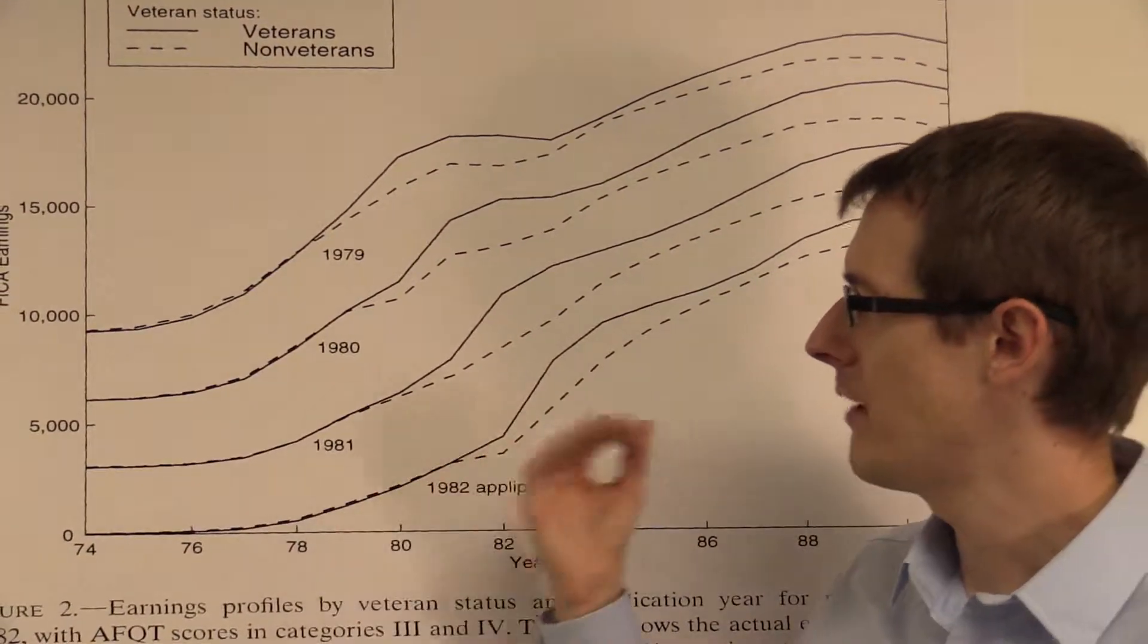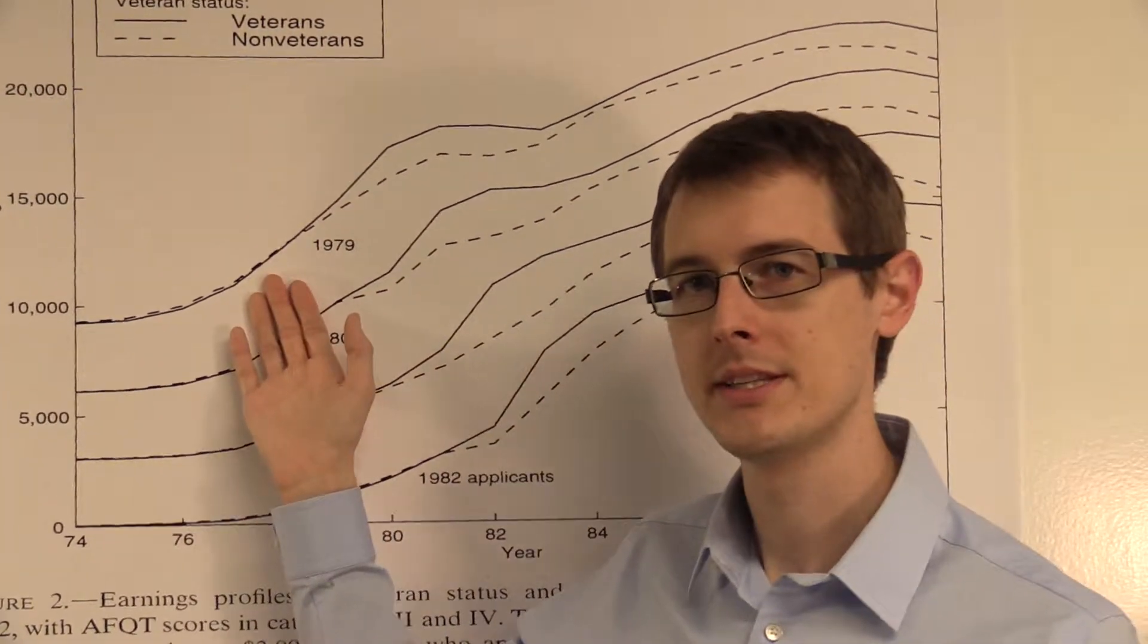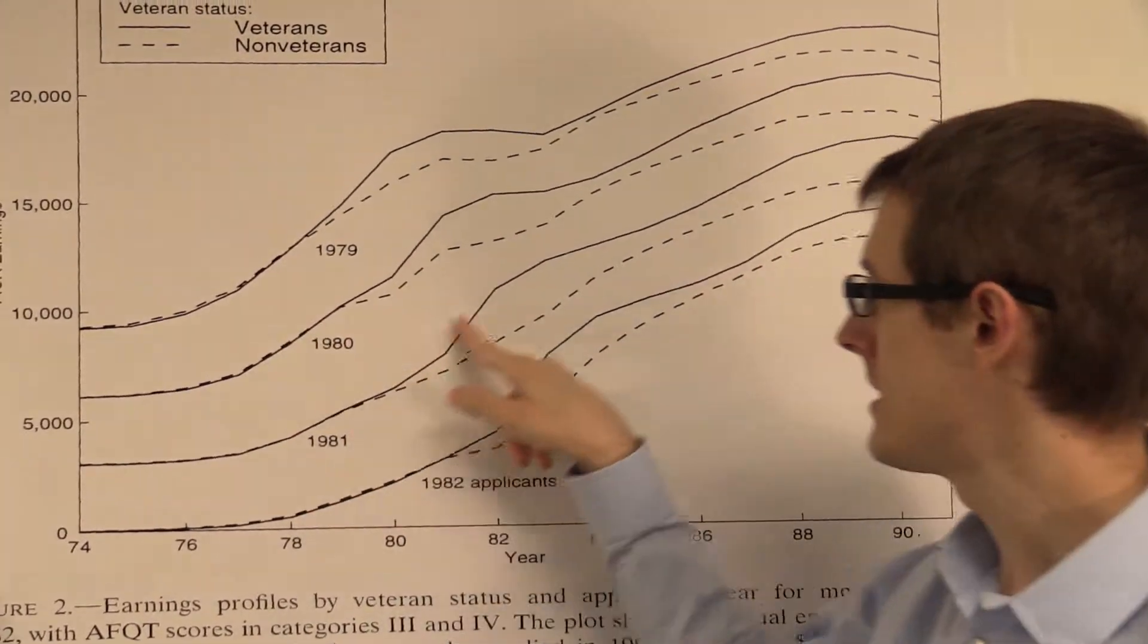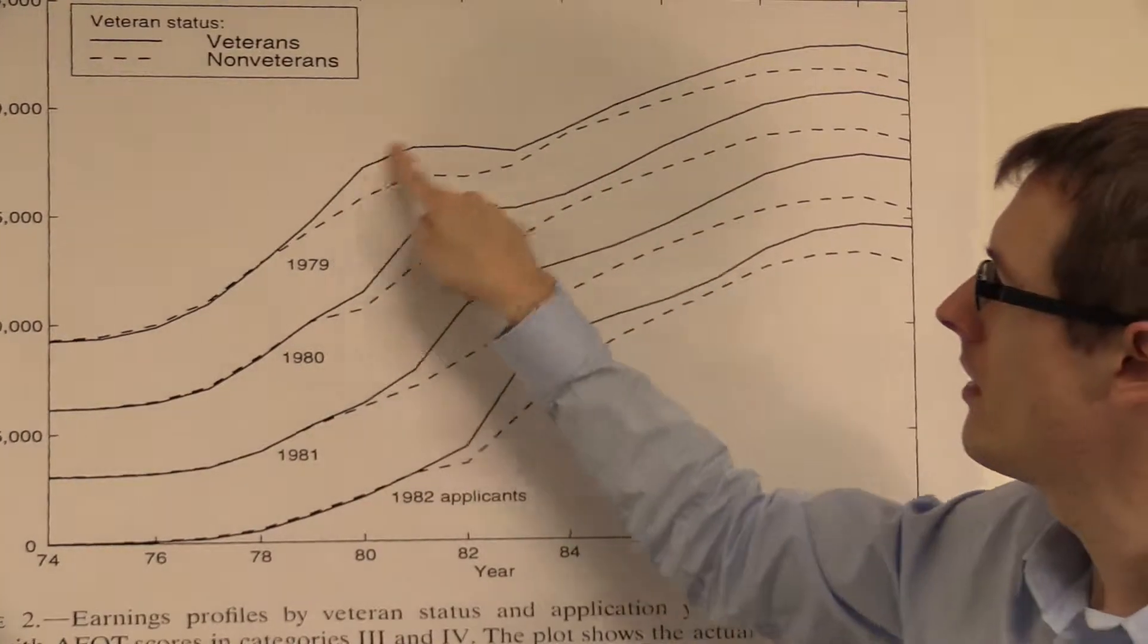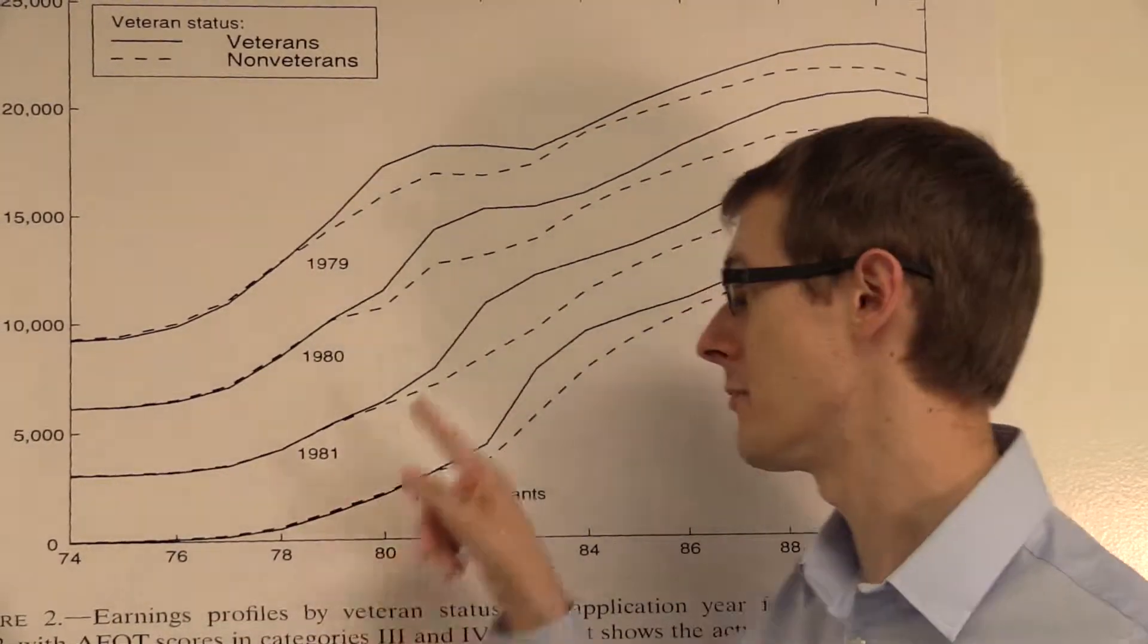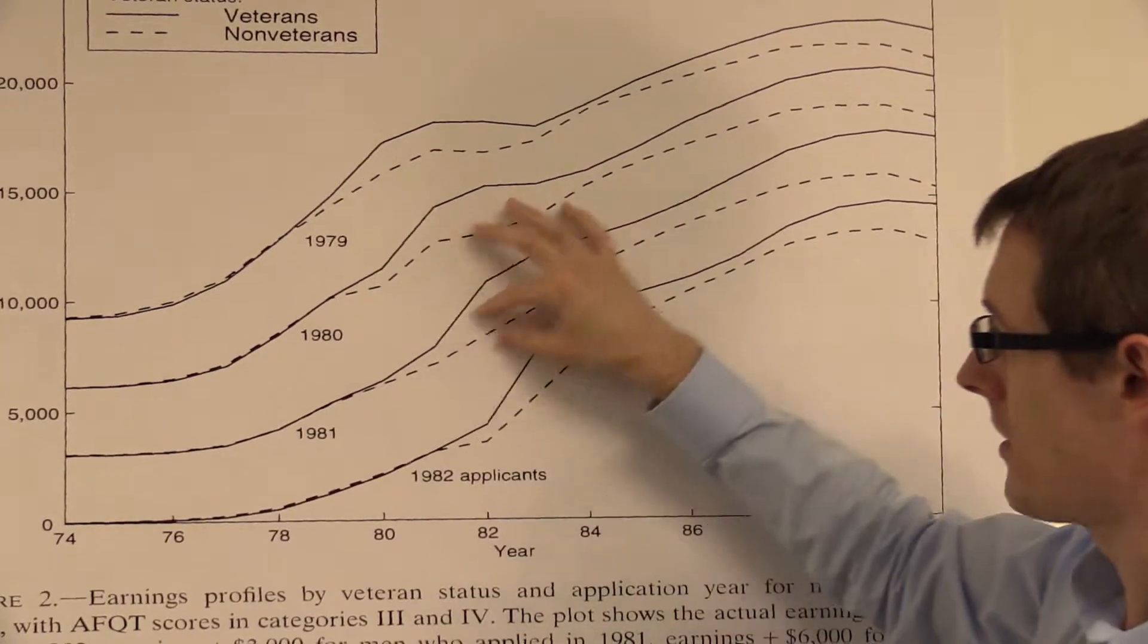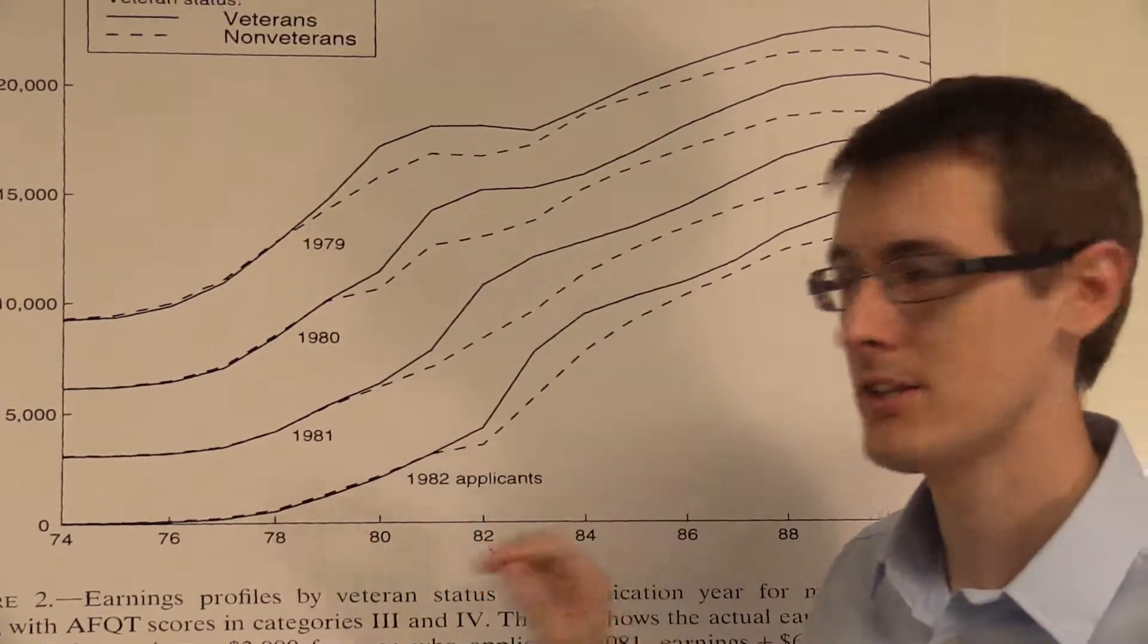So the main takeaway is that we can see for each cohort of applicants the people who enlisted in the military made more money than the people who did not enlist in the military. There's this gap that we see in earnings over the lifetime.